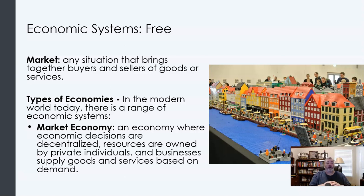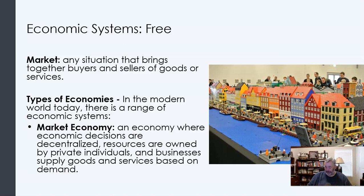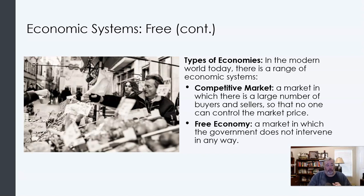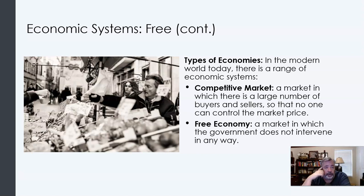There are different types of economic systems. A market economy is one in which economic decisions are not based on government planners — there's generally no intervention by the government. This is what we think of as being decentralized. Resources are owned by private individuals, and businesses supply goods and services based on consumer demand. Another really important idea is that we want our markets to be competitive. There are three advantages of a competitive market, and two of them are related.